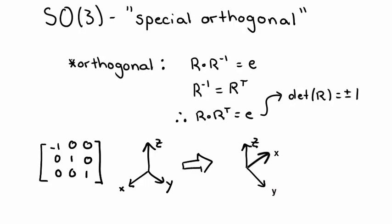In order to preserve the handedness of the system and restrict the group to just rotations, we require that all elements of SO(3) have a determinant of positive 1.